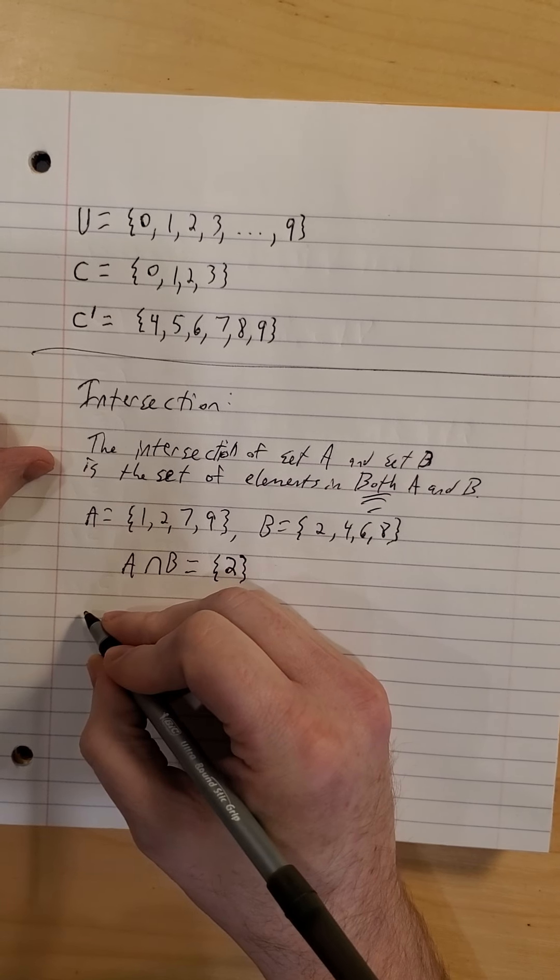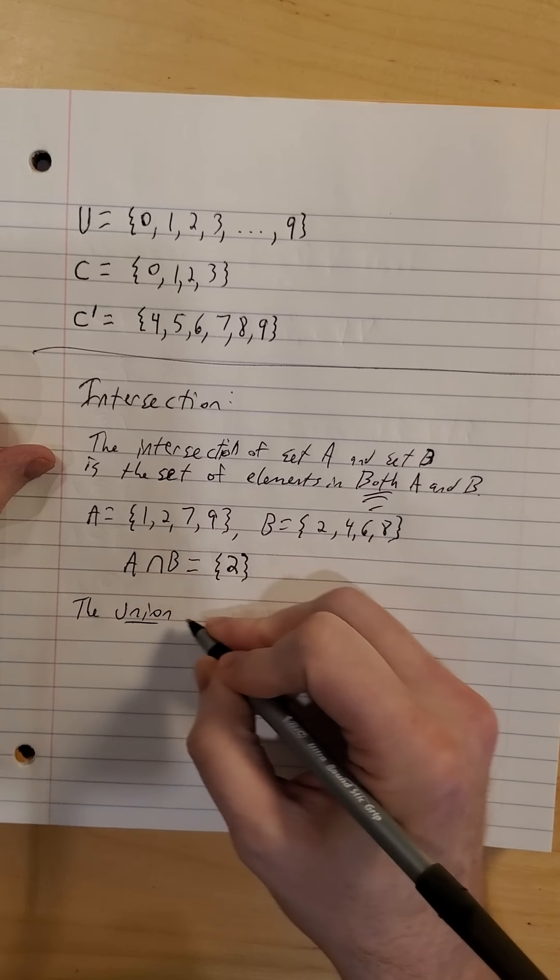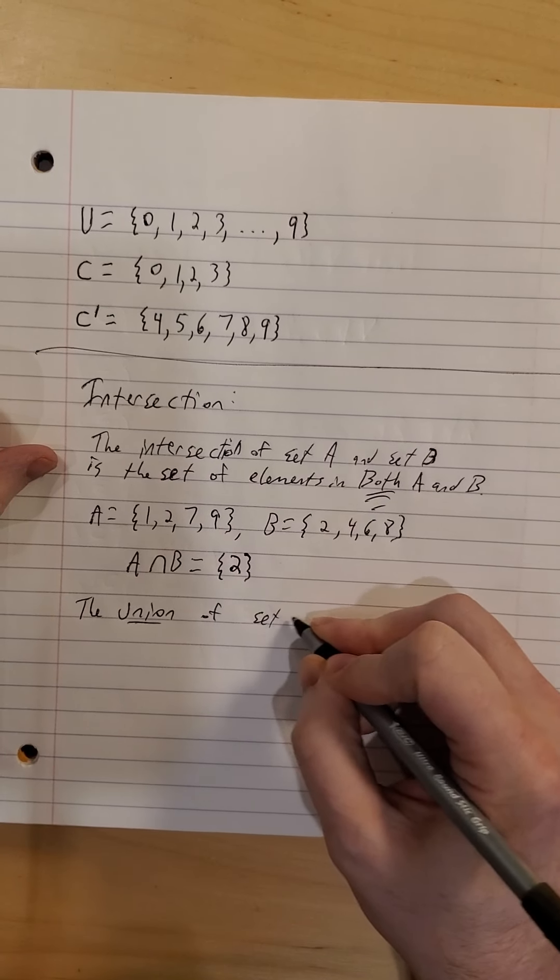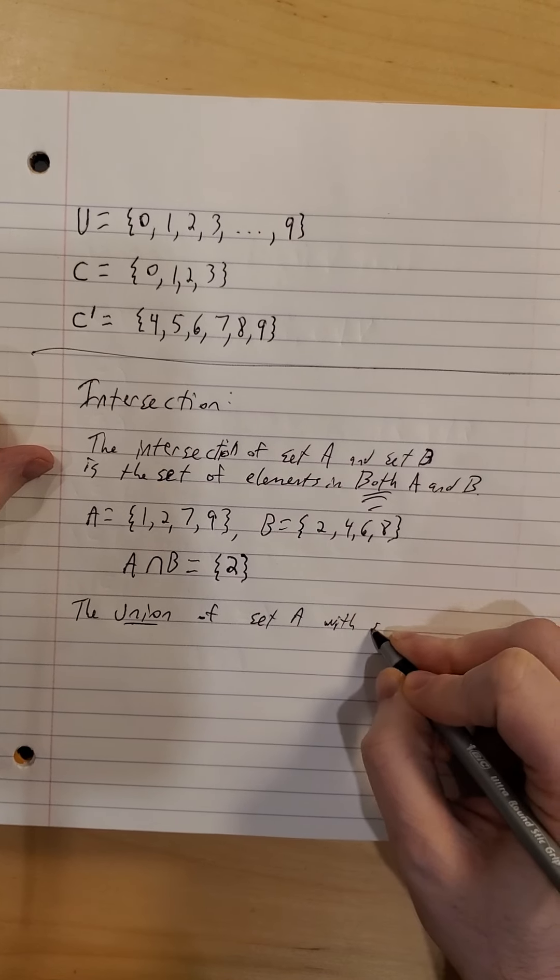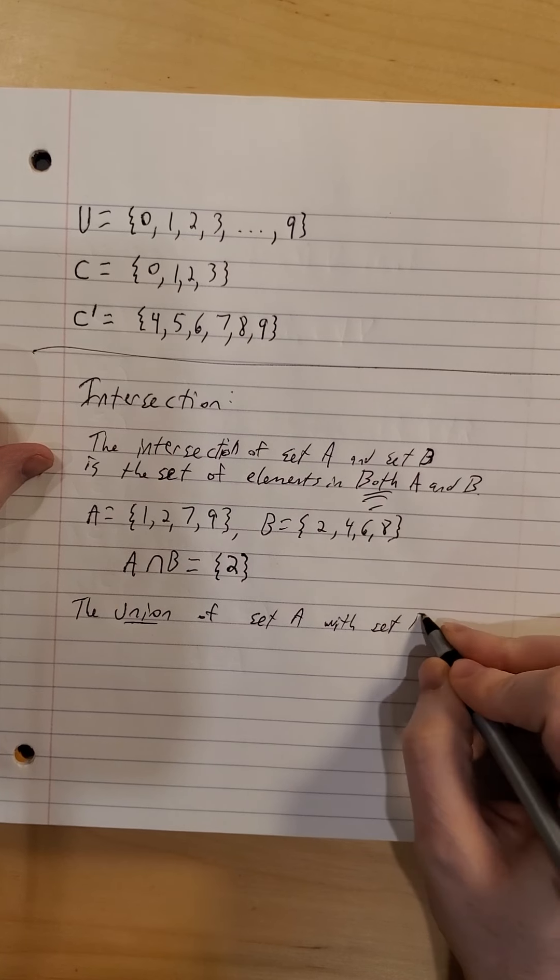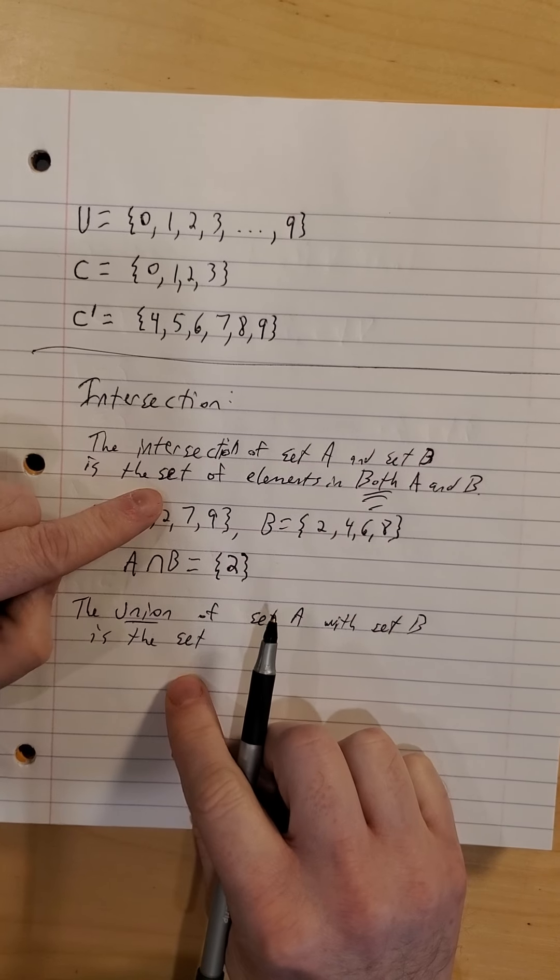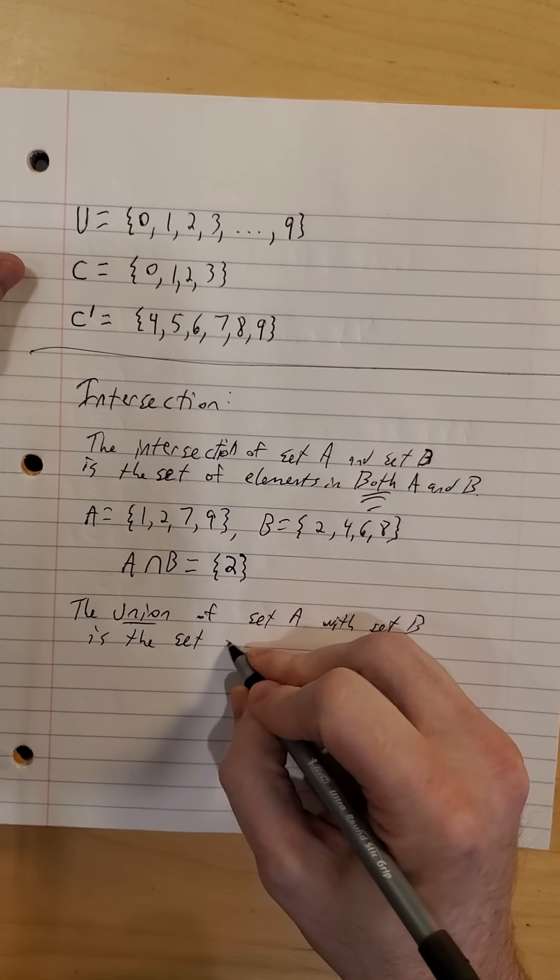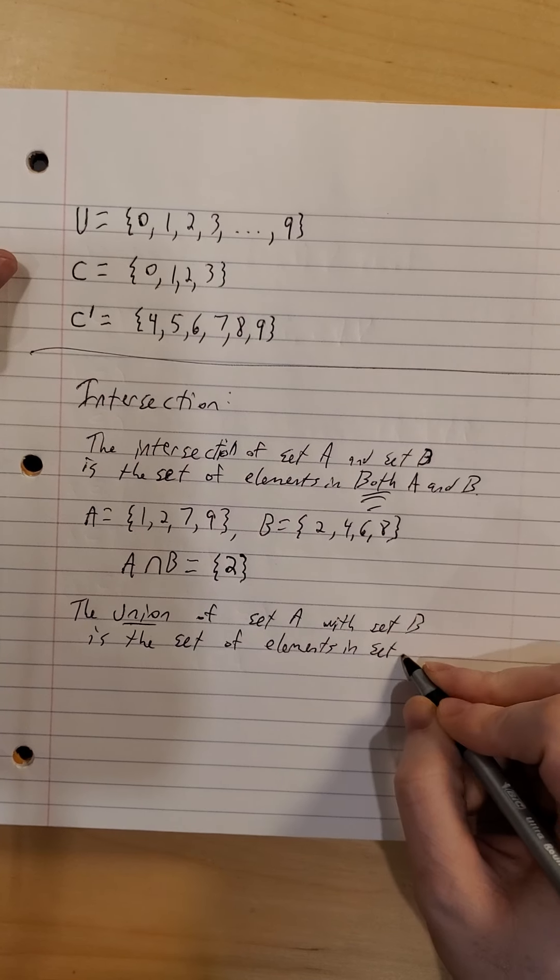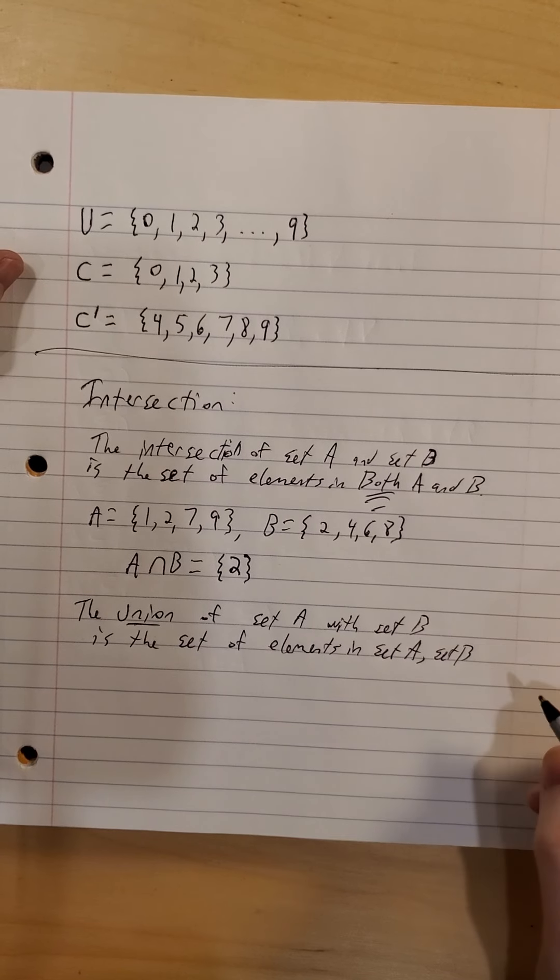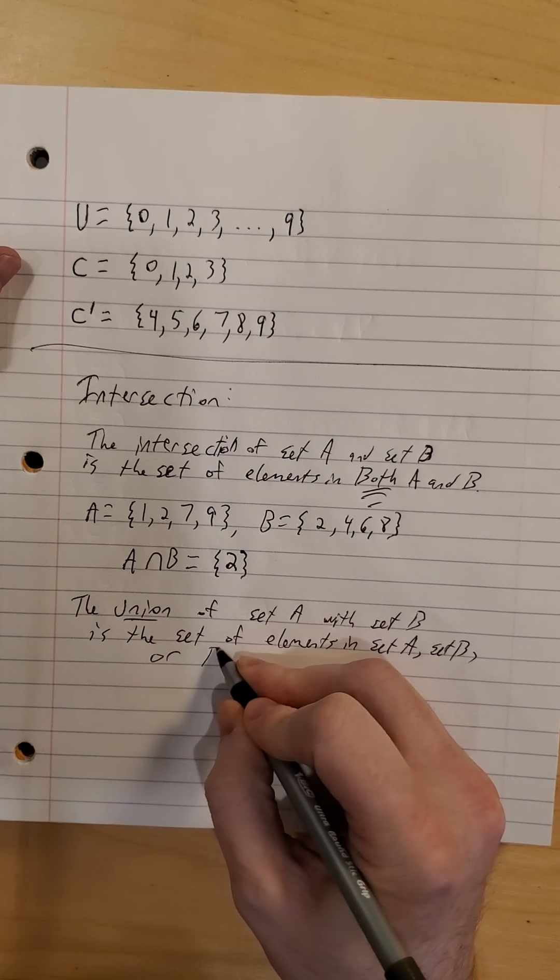The union of two sets. Union of set A with set B is the set. So again, we're doing an operation on the sets. We're coming up with another set.